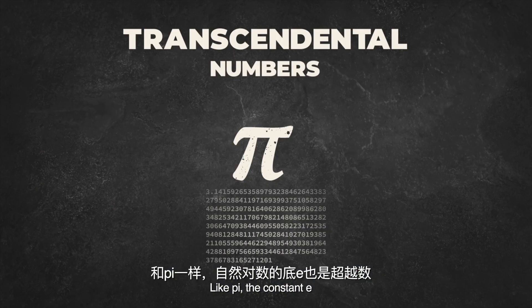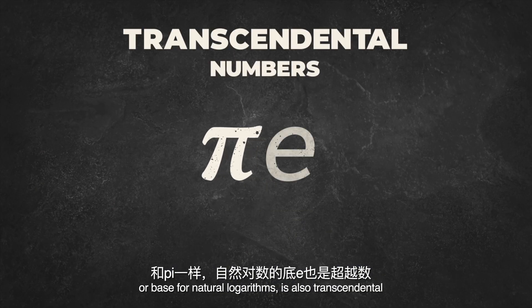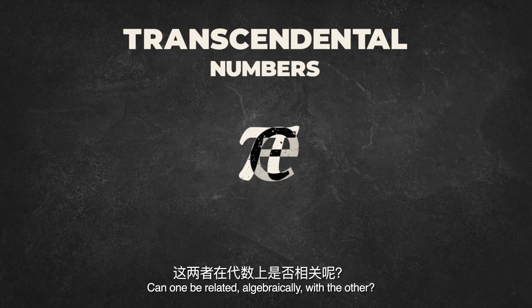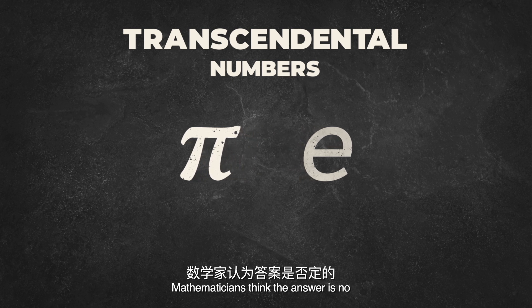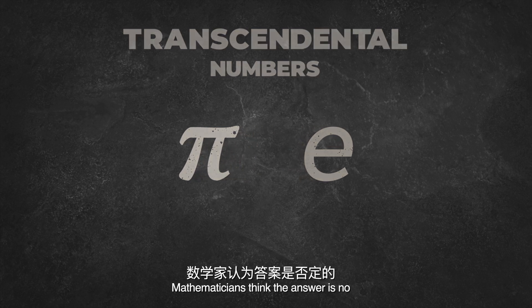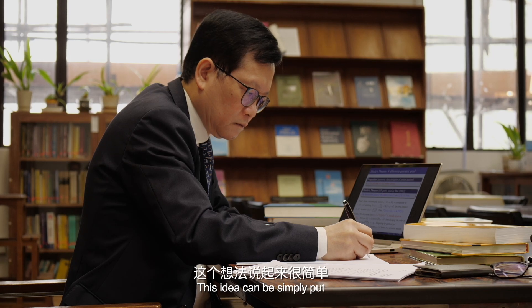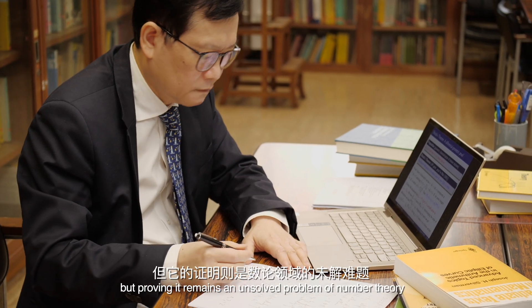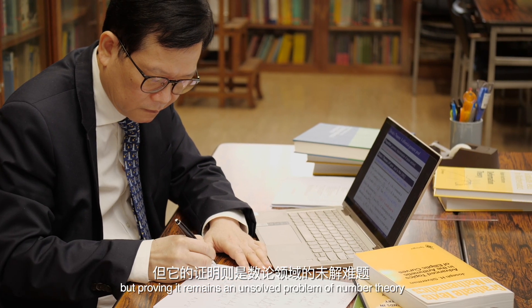Like pi, the constant e, or base for natural logarithms, is also transcendental. Can one be related, algebraically, with the other? Mathematicians think the answer is no. This idea can be simply put, but proving it remains an unsolved problem of number theory.